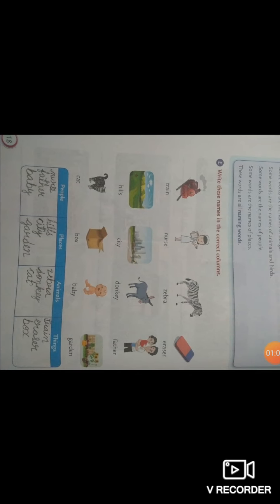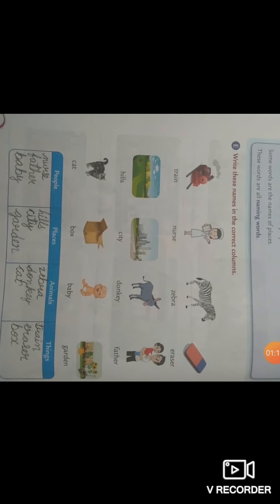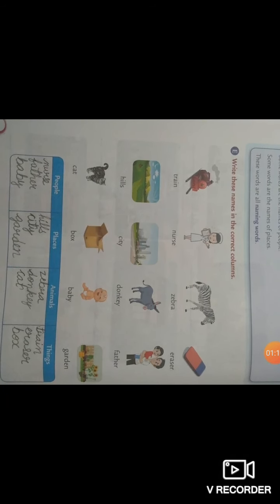These are the pictures of people, places, animals, and things. You have to pick up the right word for the correct column. Like first of all there is the picture of train. What is train? Train is the name of a thing.